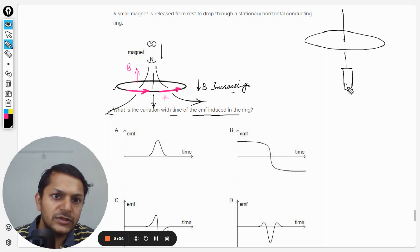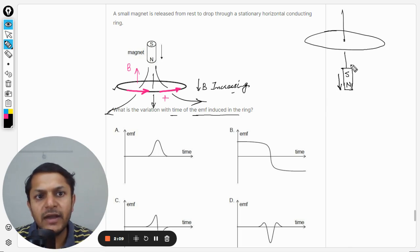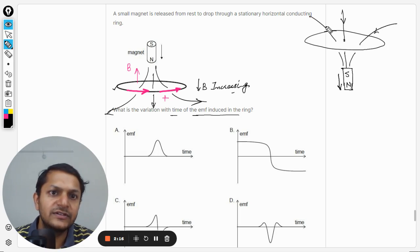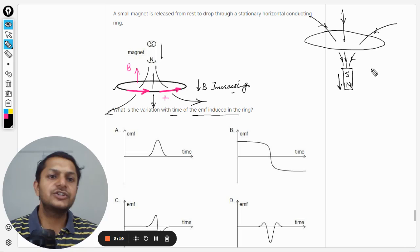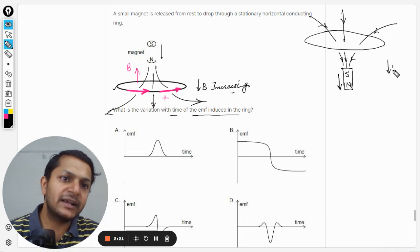So this is the north pole, this is the south pole, and the magnet is falling. Now the magnetic field will be looking somewhat like this. It will be entering into the ring like this, so the ring will say that the magnetic field is downward and that is decreasing.